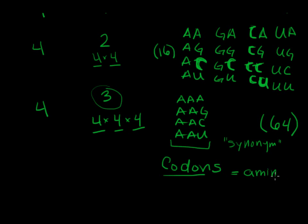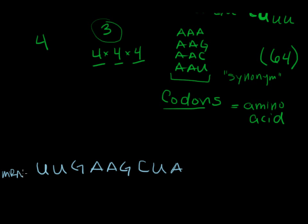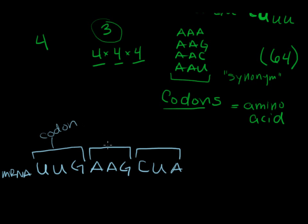If we take a look at a strand of mRNA — I'm just going to make one up: G, A, A, G, C, U, A — each group of three letters would be a different codon, and they'd each code for a unique amino acid. So if we look at these codons, we actually have charts for them.